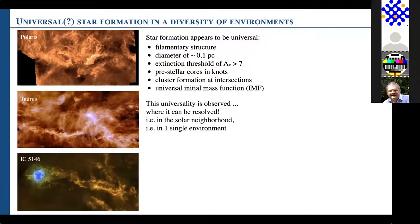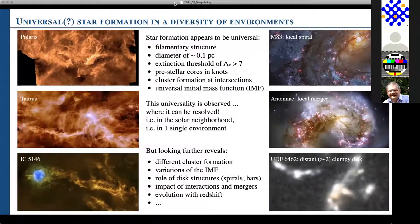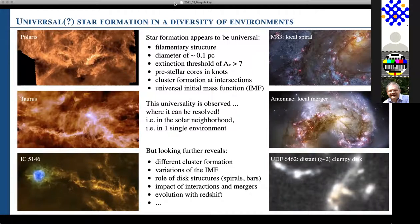If you observe the star formation process it seems to be universal: you see filamentary structure in all clouds with a more or less constant diameter of something like 0.1 parsec, you have an extinction threshold which also seems universal, and presolar cores are found in the knots along the filaments. For clusters they're more likely to be found at intersections of filaments where you get higher density over a larger volume. If you look at individual stars you see what appears to be a universal initial mass function, something close to the Chabrier or Kroupa formalism.